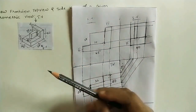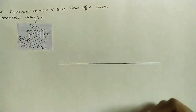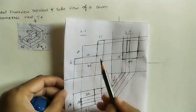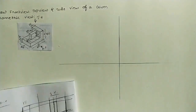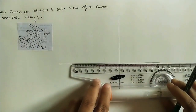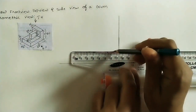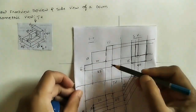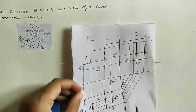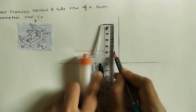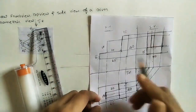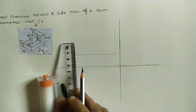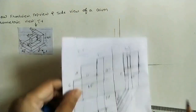Let us do these three views on the sheet using instruments. Initially do a horizontal reference line, then do the vertical line perpendicular to the horizontal line. For the front view, take a height from the horizontal line — 65 mm. For taking parallel lines I am using the roller scale; by using a drafter it is easy to do horizontal parallel lines. Take 65 mm here and draw a dark line. After that take 15 mm height, and this side is 40 mm. Take 40 mm from the reference vertical line. Here take 15 on this side and 15 on this side.